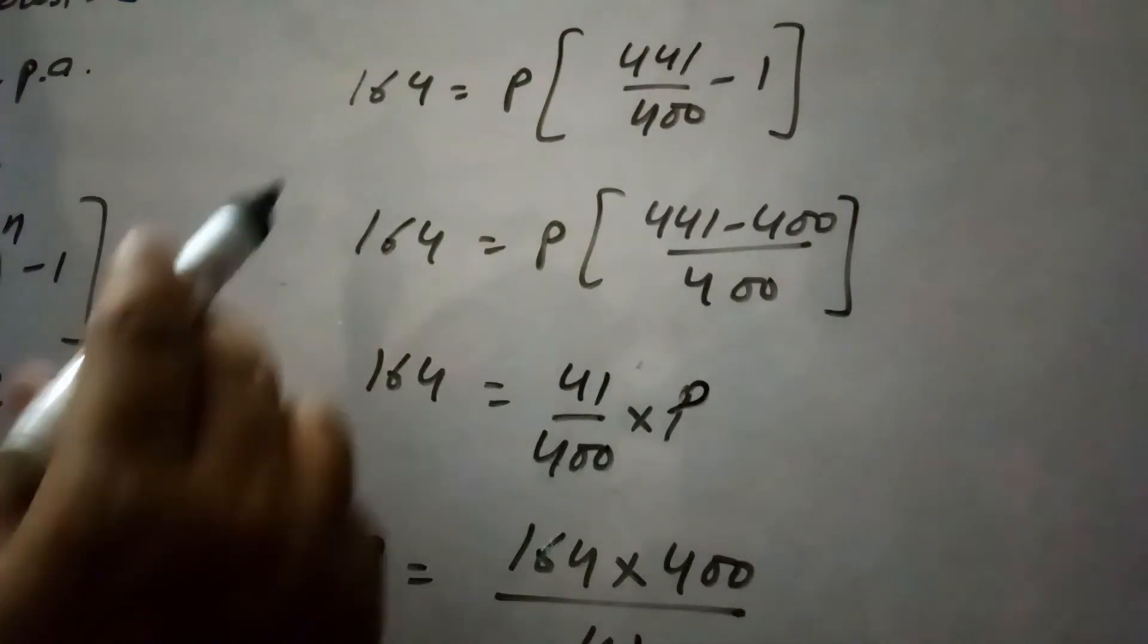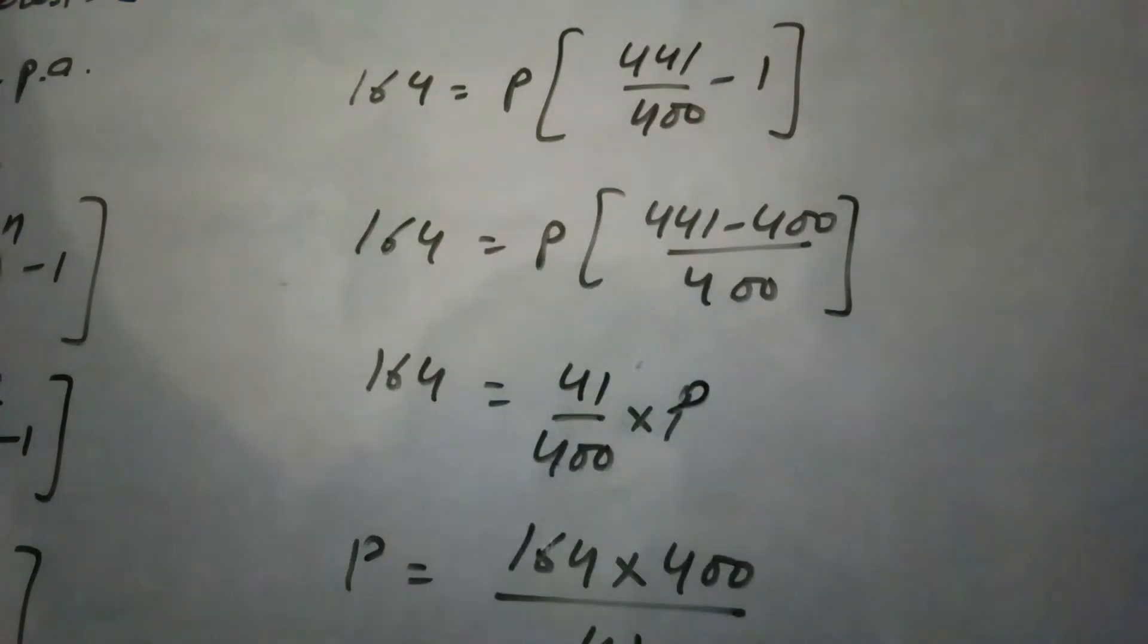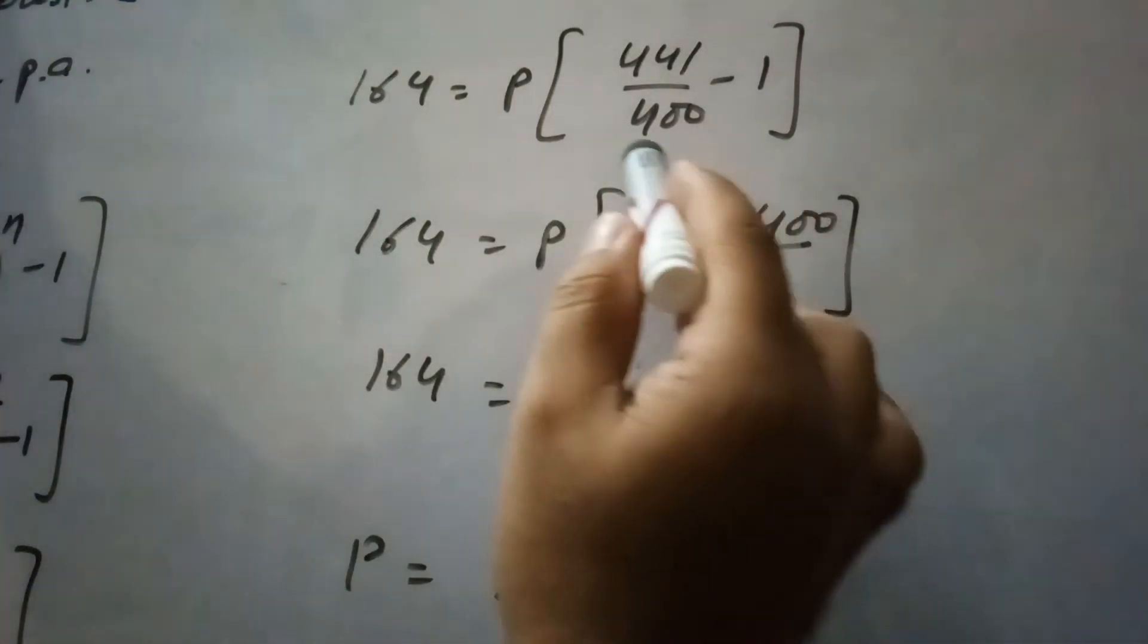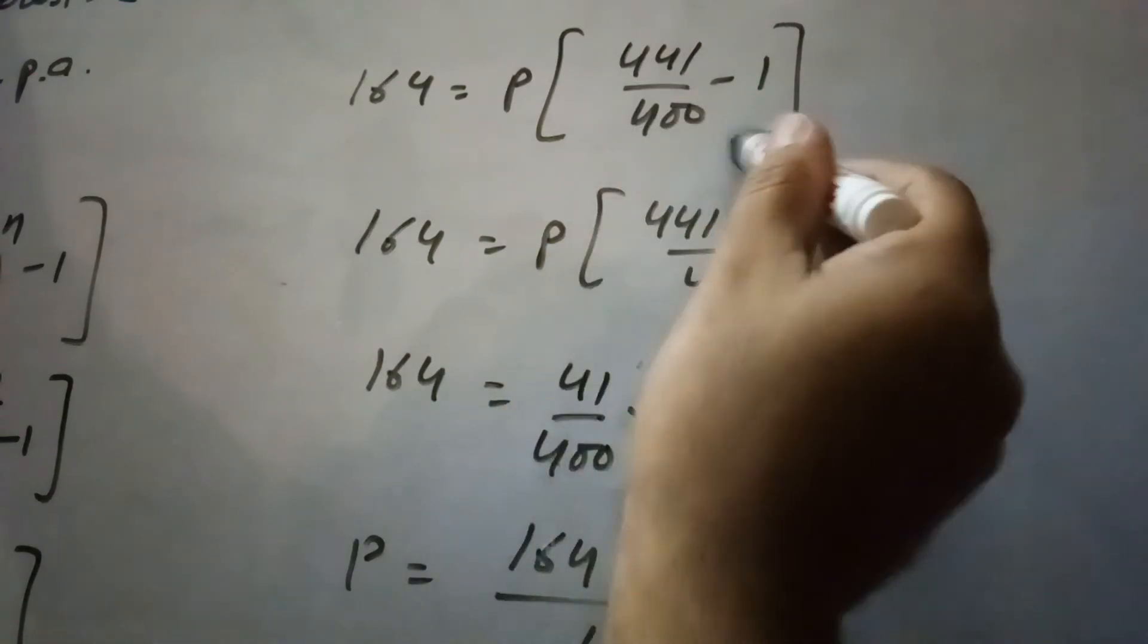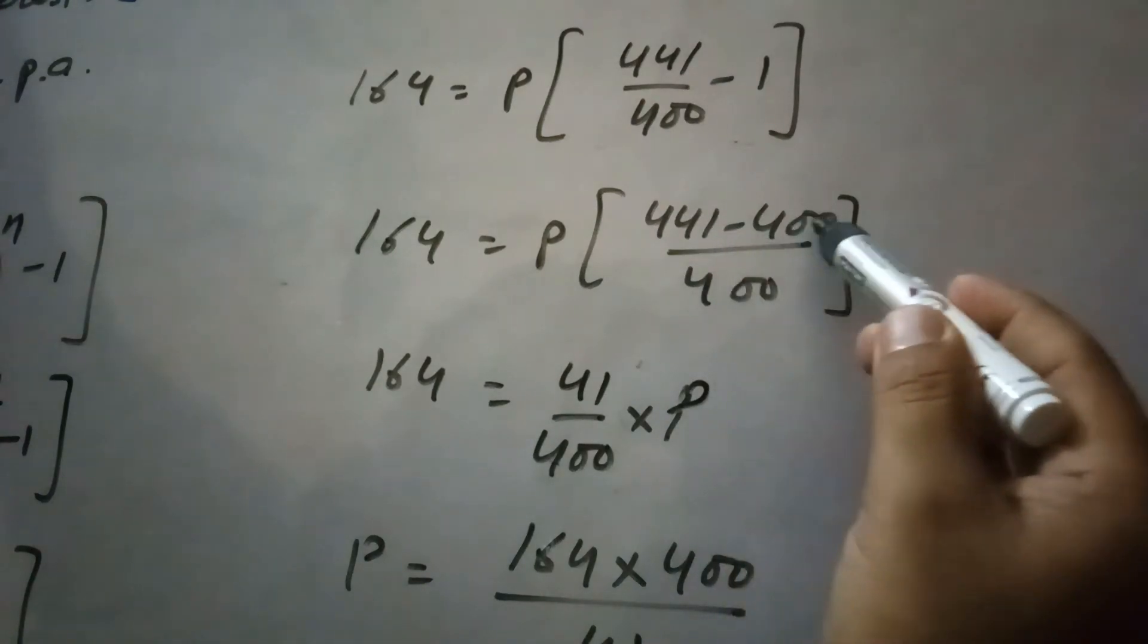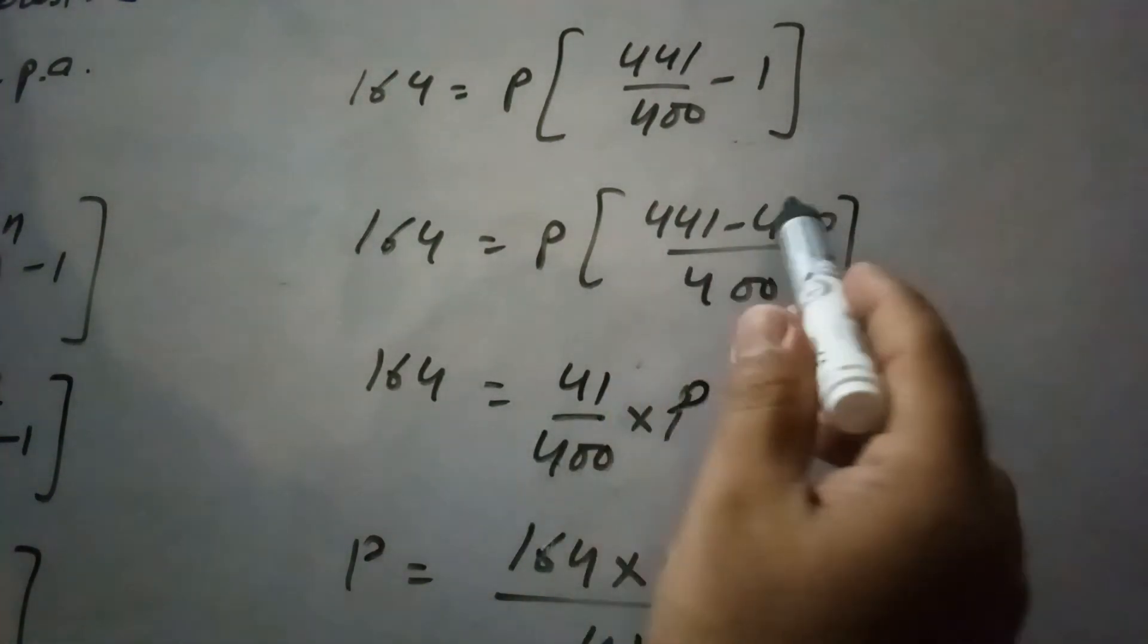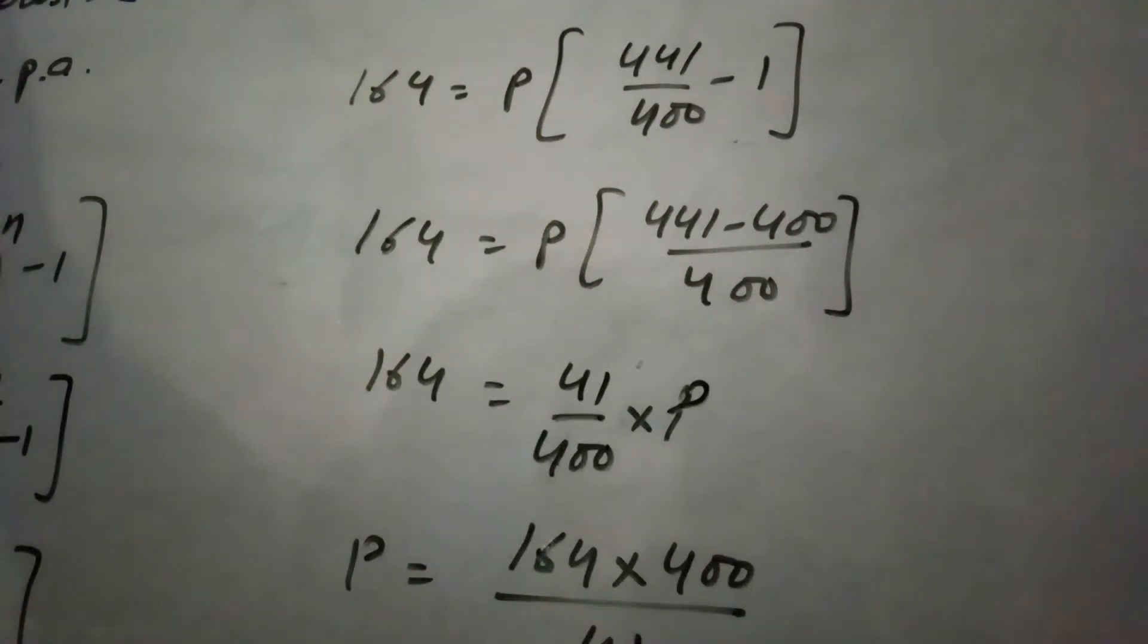So this becomes 164 equals to P into 441 upon 400 minus 1. So again we will take LCM here and the LCM is 400. So this becomes 441 minus 400 upon 400. So after subtracting this is 41 upon 400.